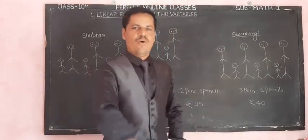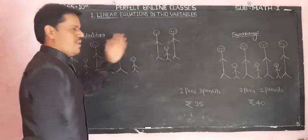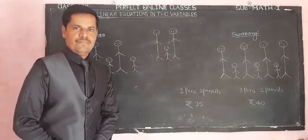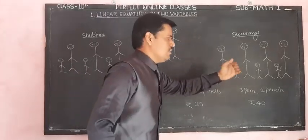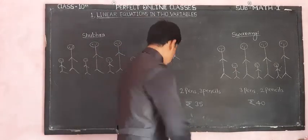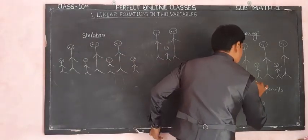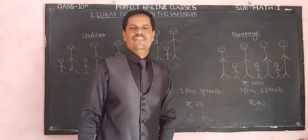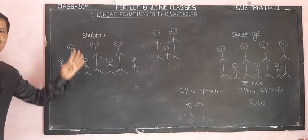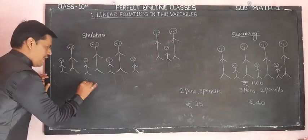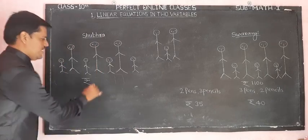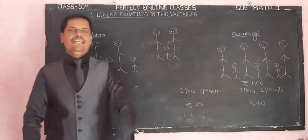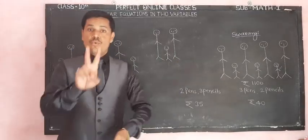Shubha and Faurangi are friends. In Faurangi's family there are seven family members. The ticket collected by the conductor from Faurangi's family is Rs. 1,100. There are four adults and three children in Faurangi's family, and in Shubha's family three adults and four children, and the ticket amount from Shubha's family is Rs. 1,000.